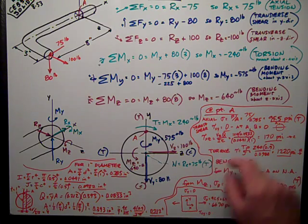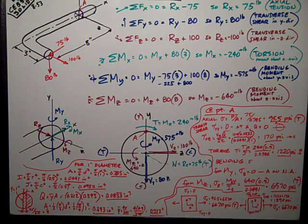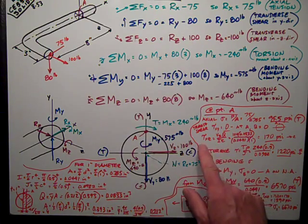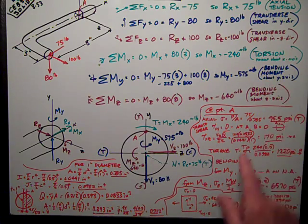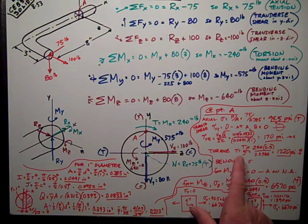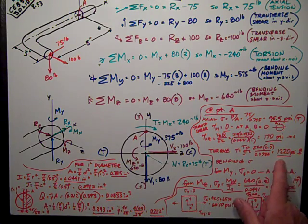I'm through with all my straight line forces: FY, FZ, FY, FX, and FZ. Now I'm ready to talk about my moments, of which I have one torsion. Shear stress due to that is T rho over J. It works out to be 1220 psi.